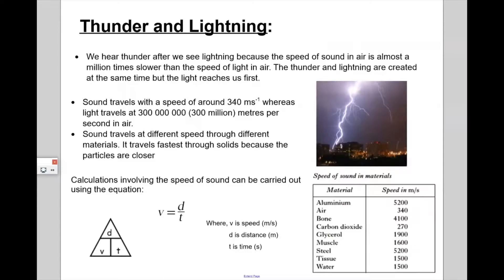This phenomena or this observation clearly demonstrates that the light which is an electromagnetic wave they travel faster than the sound. So basically sound they travel at the speed of 340 meters per second whereas the light it travels 3 multiplied by 10 to the power 8, which is 300 million meters per second in air. And the sound travels at a different speed through different medium or different material.